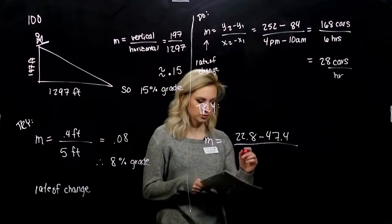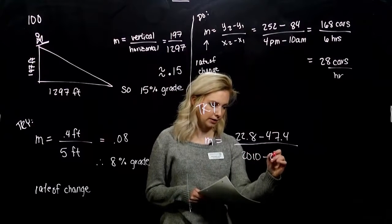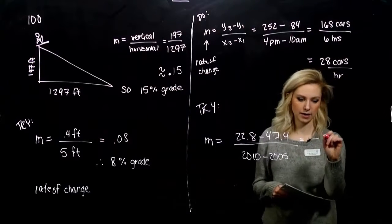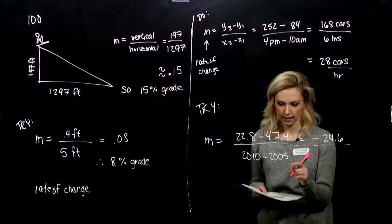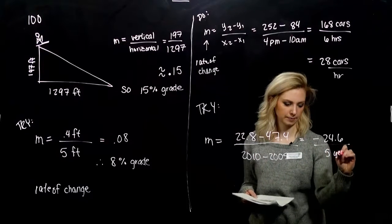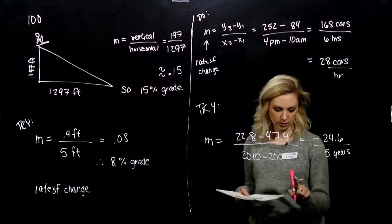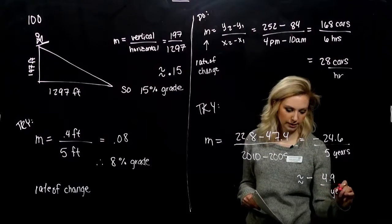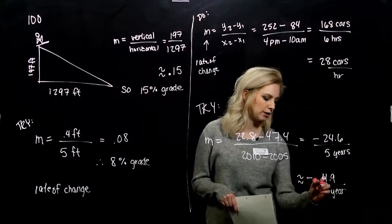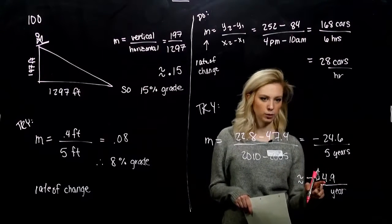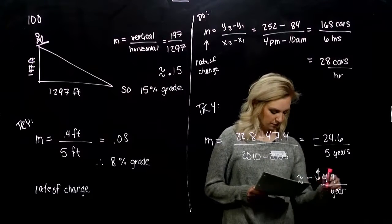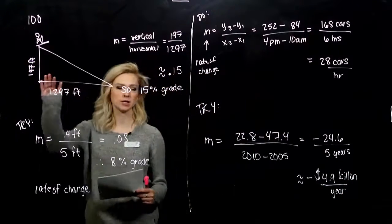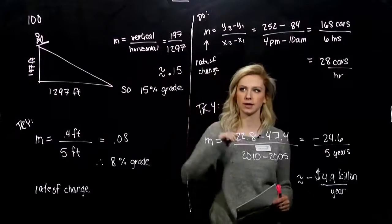And we were looking between 2005 and 2010. So difference between the revenues, we're looking at negative 24.6, and five years had passed. So if we do the division, what did you get around? Negative 4.9 per year. And again, we want to give units on this rate of change. So we're talking about money, but it's not 4.9 dollars that they're losing. They're losing 4.9 billion dollars per year. So slope is super important. It has applications in the real world, and we can also think about it as a rate of change.